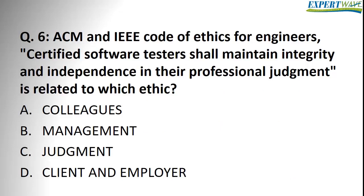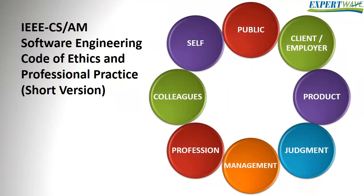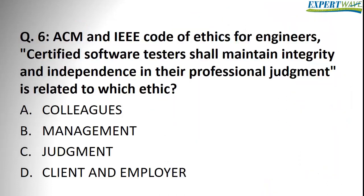Question number six: ACM and IEEE code of ethics for engineers — 'Certified software testers shall maintain integrity and independence in their professional judgment' — is related to which ethic: colleagues, management, judgment, or client and employer? This is from the code of ethics section of chapter one of the ISTQB curriculum. The question gives the definition of one of the eight codes and asks for the title. The answer is right there in the definition: 'professional judgment.' So judgment is the correct answer — option C.